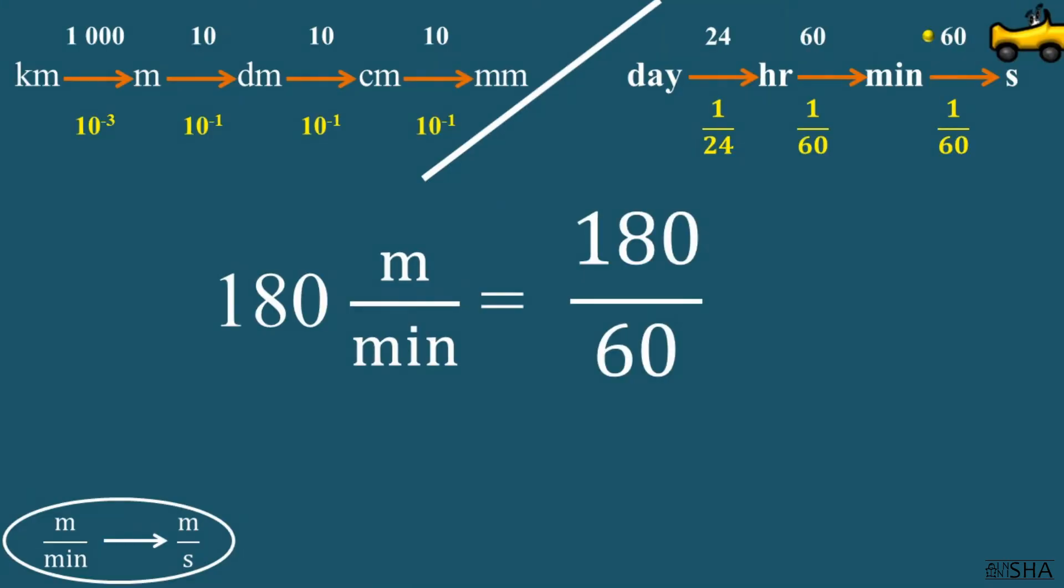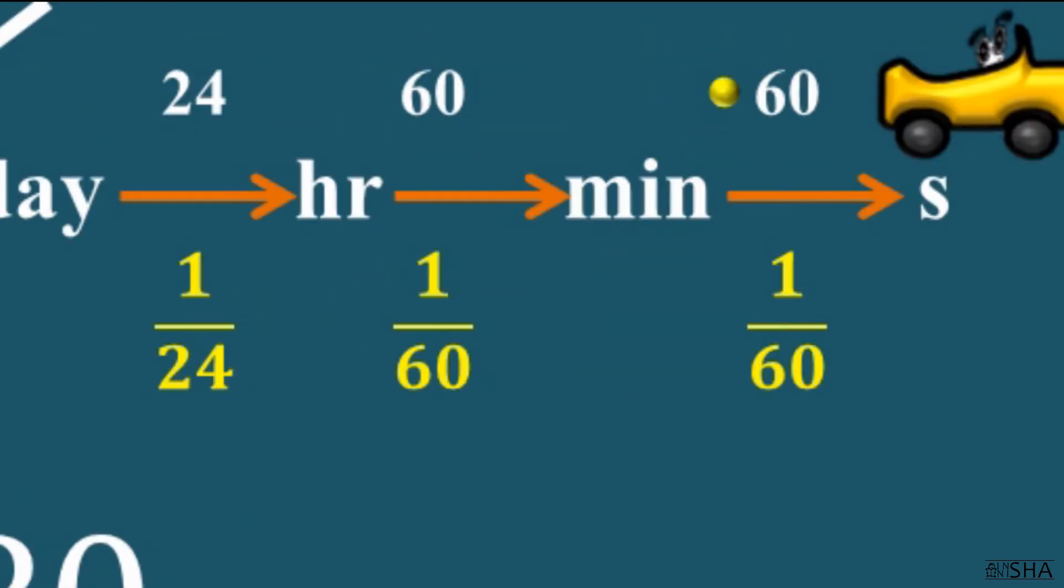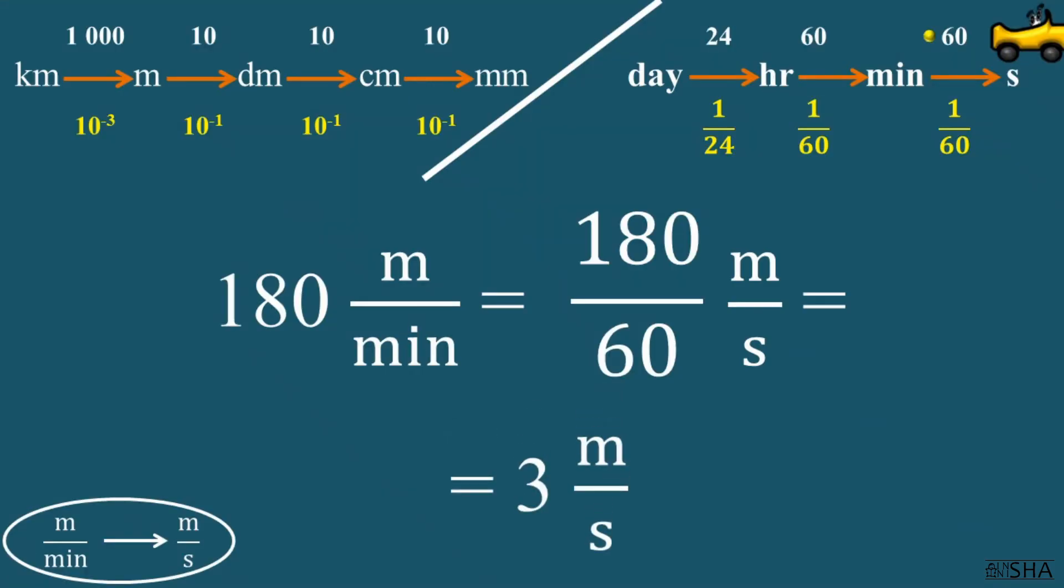Therefore in the numerator of the fraction, we simply write 180. And in the denominator, we convert minutes into seconds. There are 60 seconds in one minute. After calculations, we get the answer: 3 meters per second.